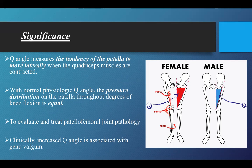A clinical significance of this Q-angle is that you may see excessive genu valgum, or knock knees. As you can see here, the knees are close together with an increased Q-angle. With an increased angle, you will see genu valgum in the knees.